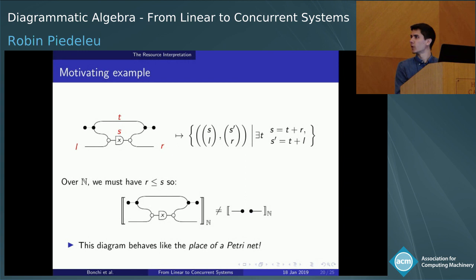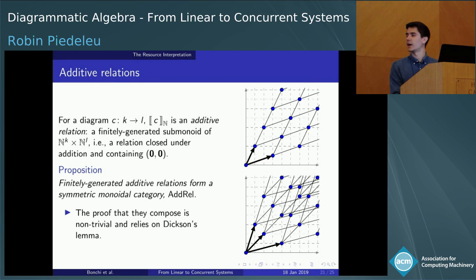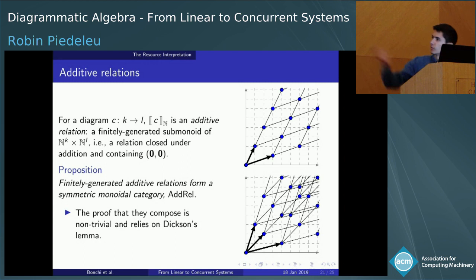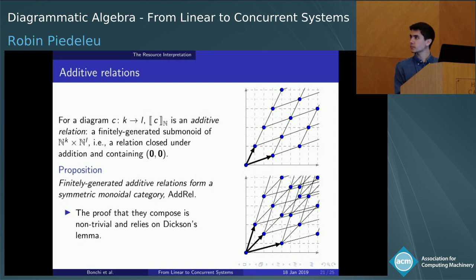We'd also like to characterize what relations our diagrams allow us to express. Our semantic domain is that of additive relations — relations that are closed under addition and contain the origin. Geometrically, they look like lattices embedded in some power of ℕ. They do form a symmetric monoidal category, and in fact the proof that they compose is non-trivial.